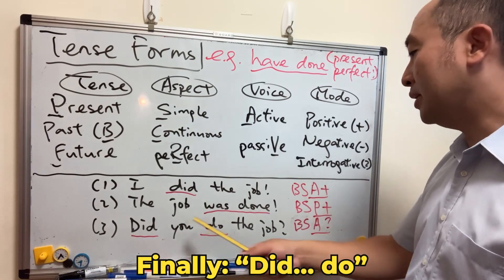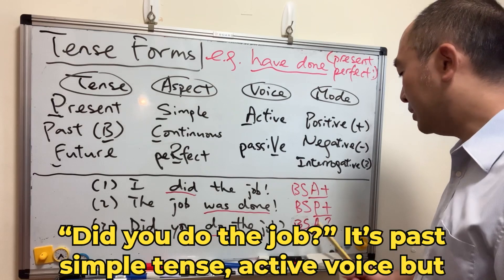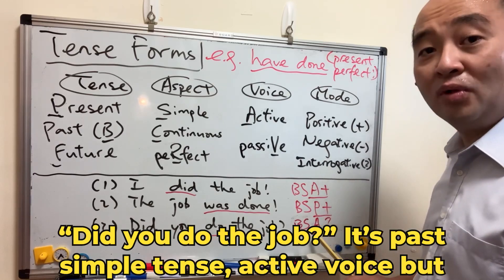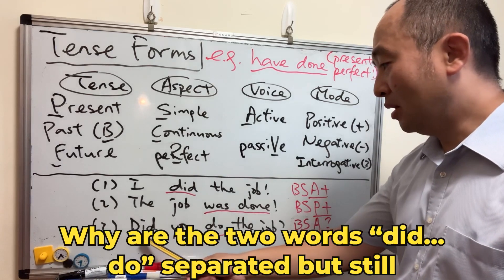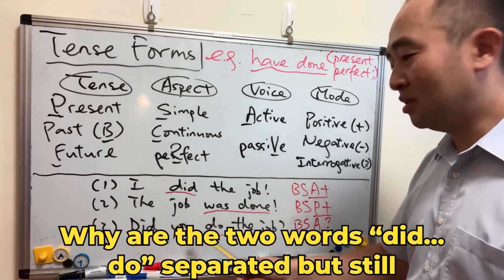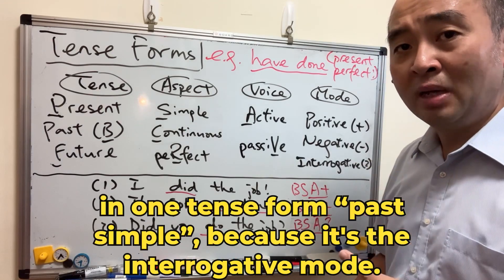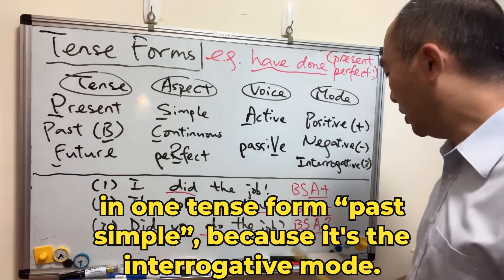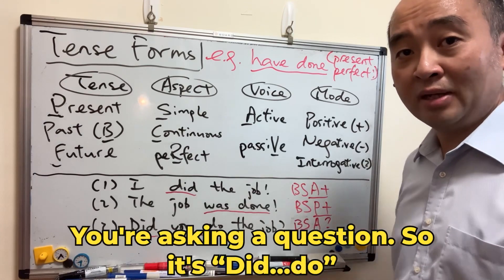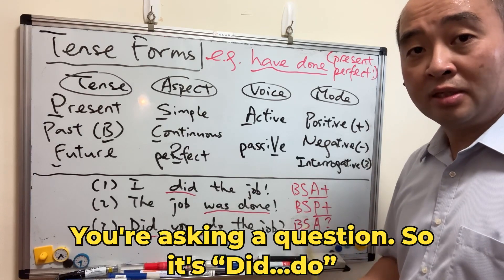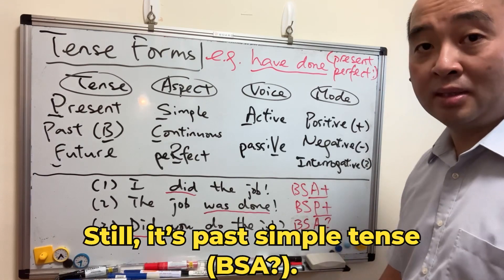Finally, 'did you do the job?' — it's past simple tense, active voice. But why are the two words 'did' and 'do' separated, yet still in one tense form, past simple? Because it's the interrogative mode — you're asking a question. So it's still past simple tense.